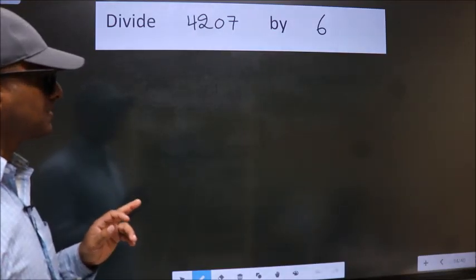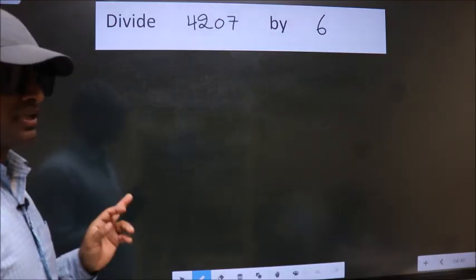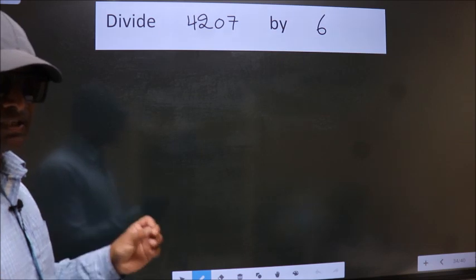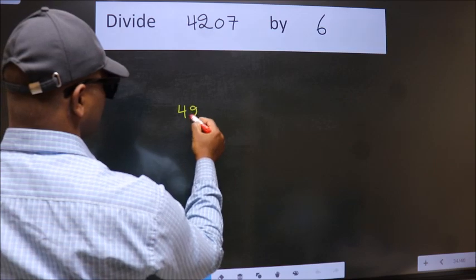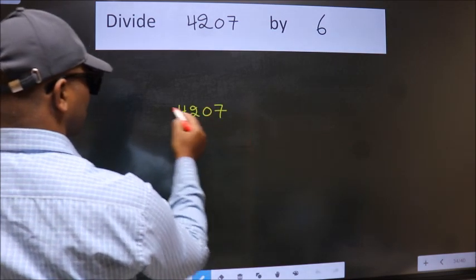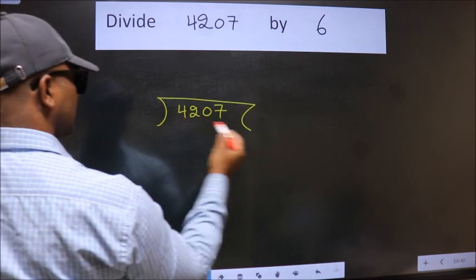Divide 4207 by 6. To do this division, we should frame it in this way. 4207 here, 6 here.